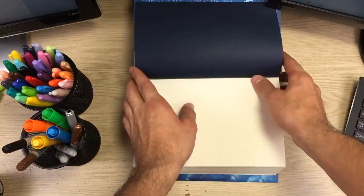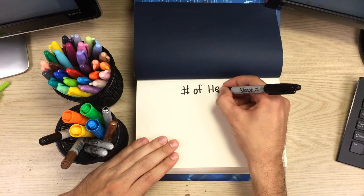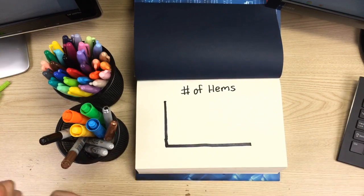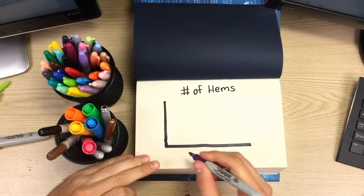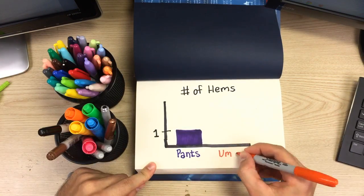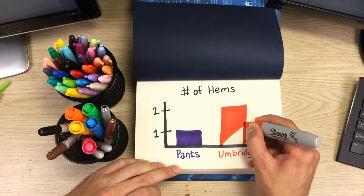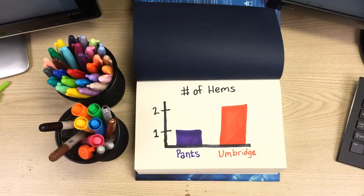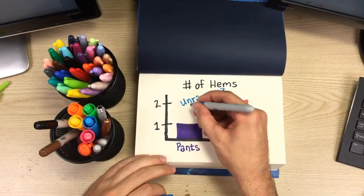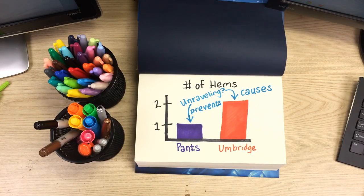Let's return to conclude this video with this particular novel's villain, which is Umbridge, and look at the number of hems in this bar graph. In the case of a pair of pants, you only need one hem to keep a particular piece of fabric from unraveling. In Umbridge's case, she announces her arrival with two hems — 'hem, hem' — with her little cough thing. And that kind of announces the unraveling of any situation in which she appears.